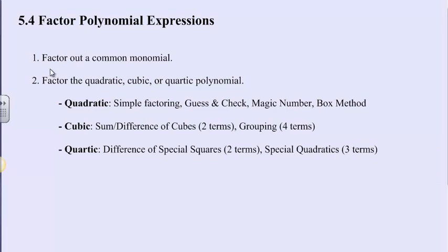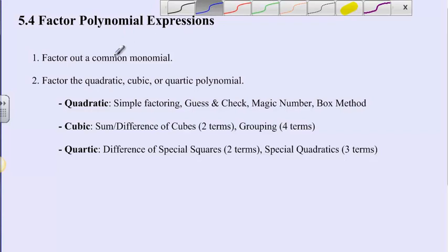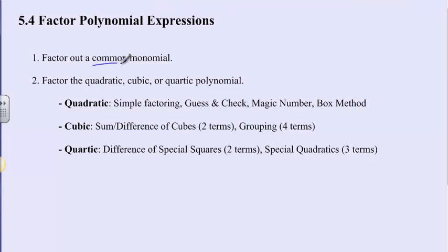The first thing that we're going to do is factor out a common monomial. If there's something that's common in all the terms, we're going to take that out and see what we end up with. After that, we're going to look and determine what type of polynomial it is — is it a quadratic, where the highest exponent is 2, a cubic with x cubed, or a quartic with x to the fourth. Based on that, we'll take a couple of different methods.